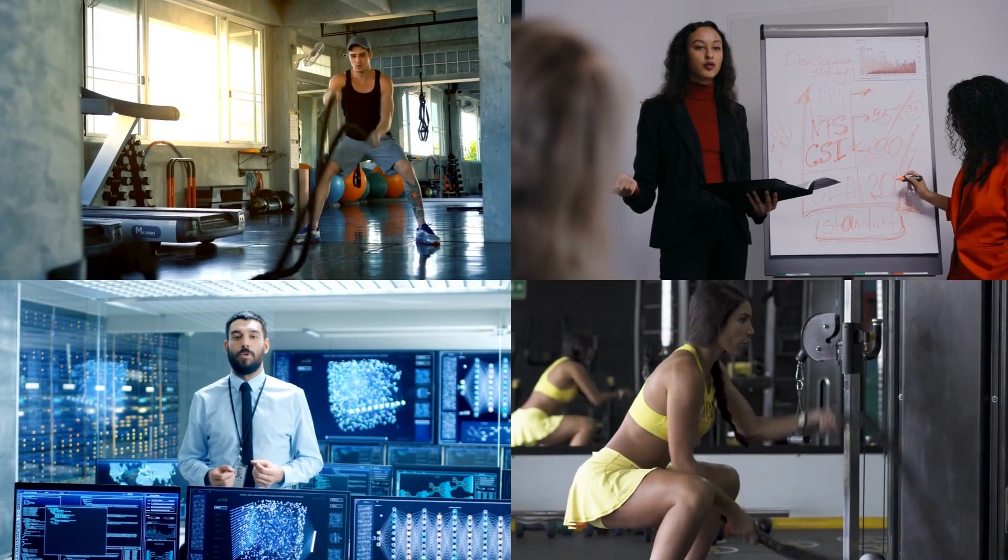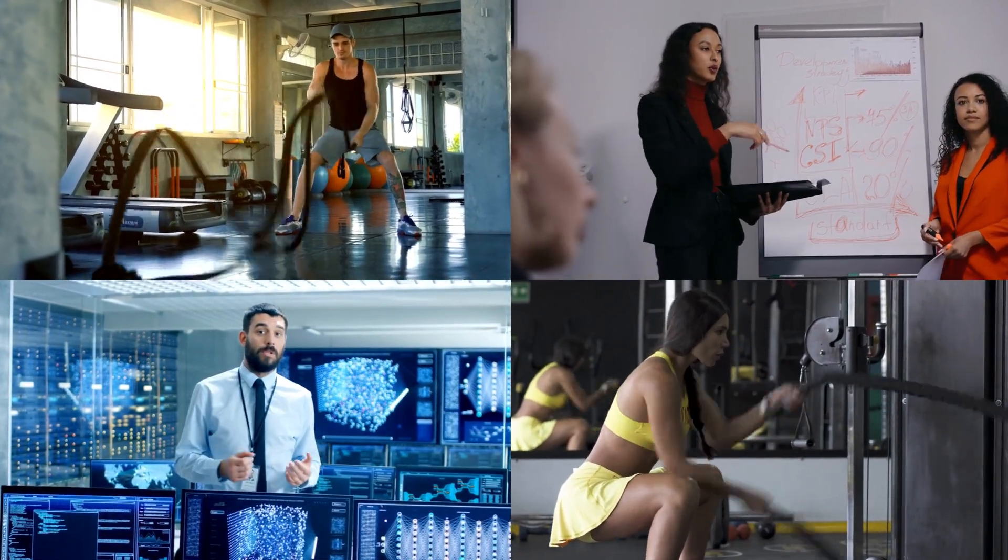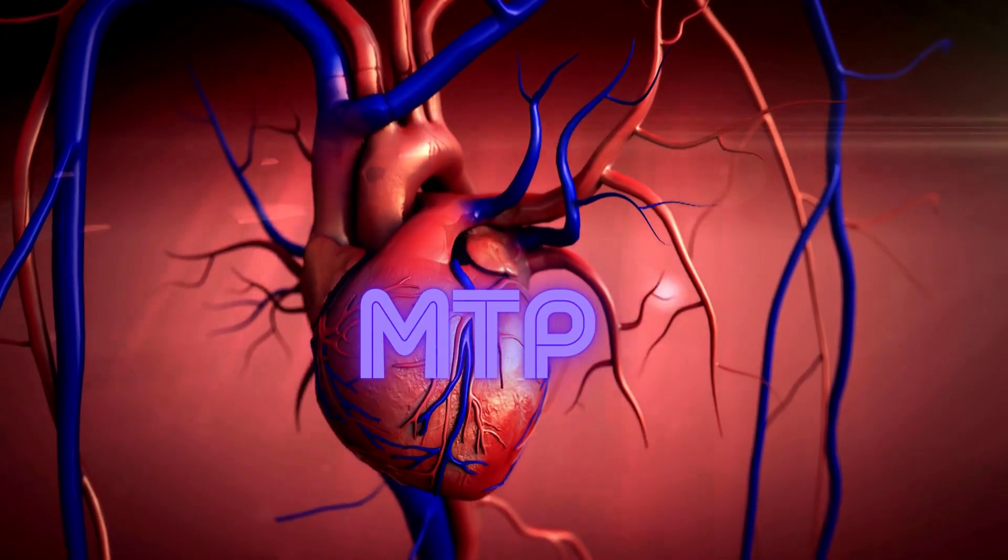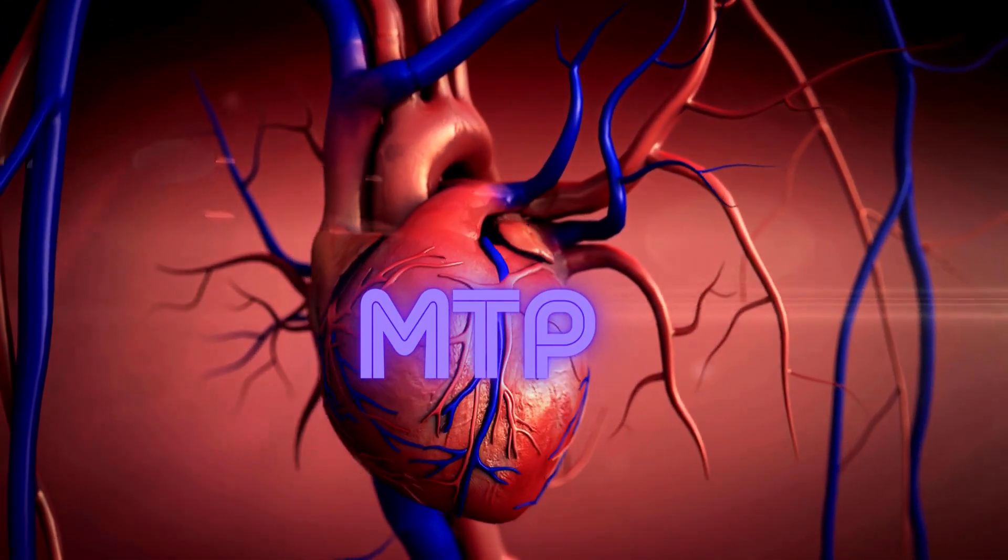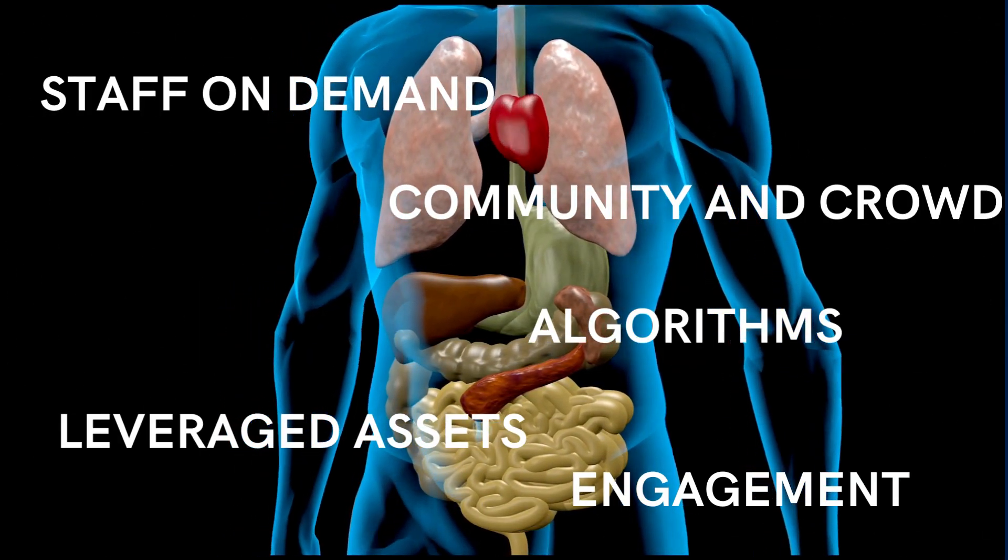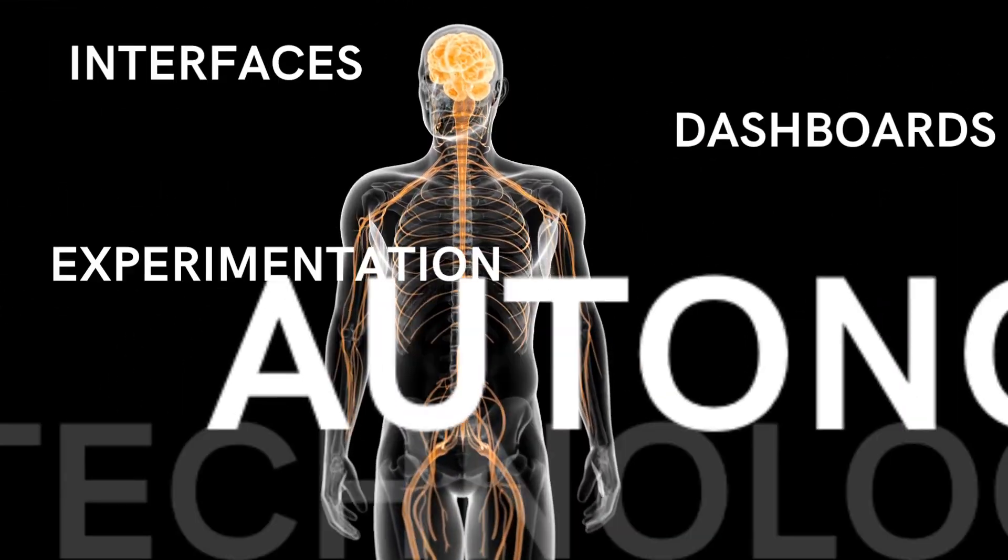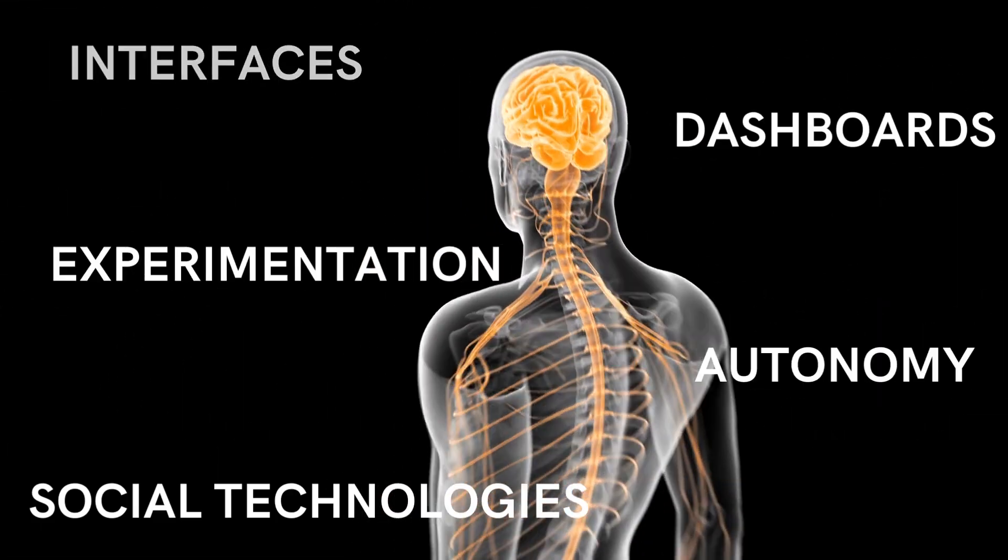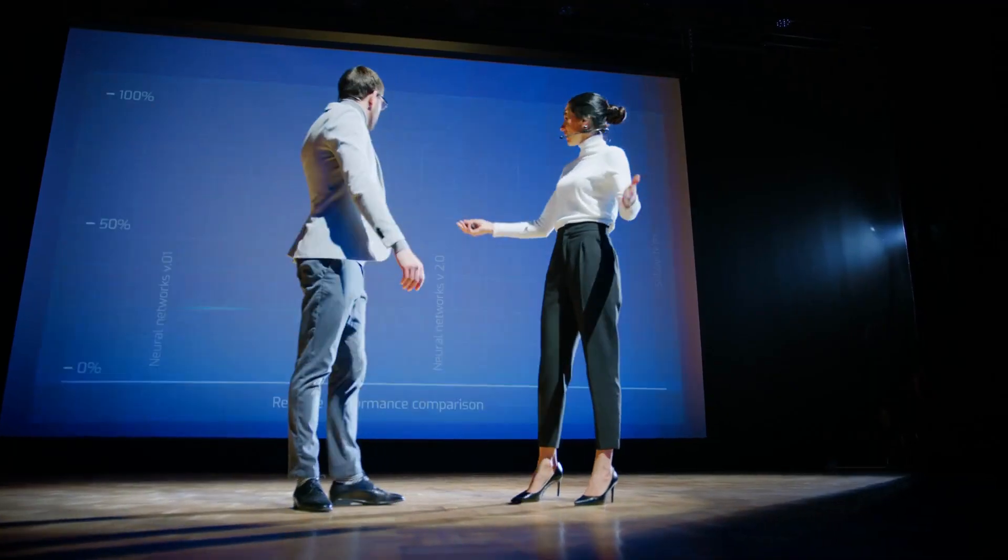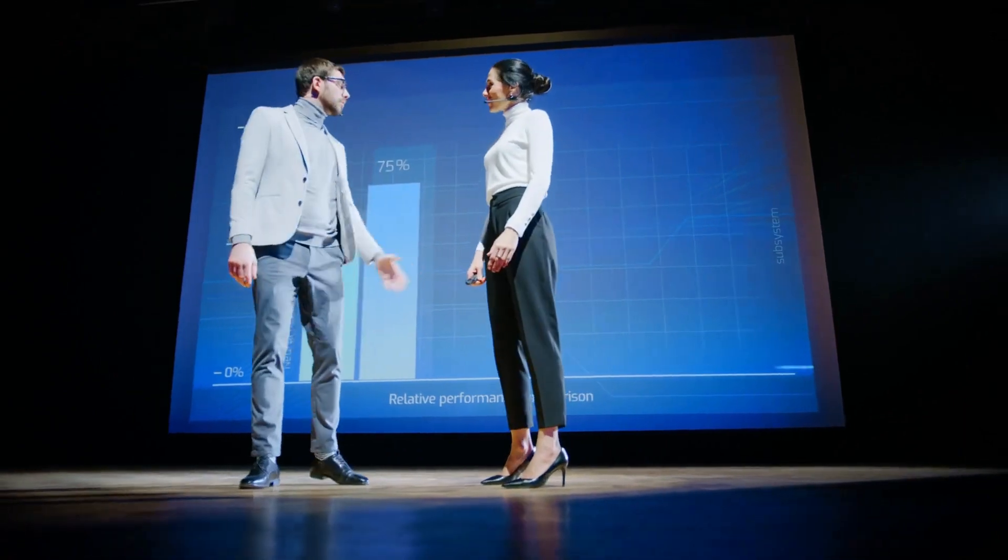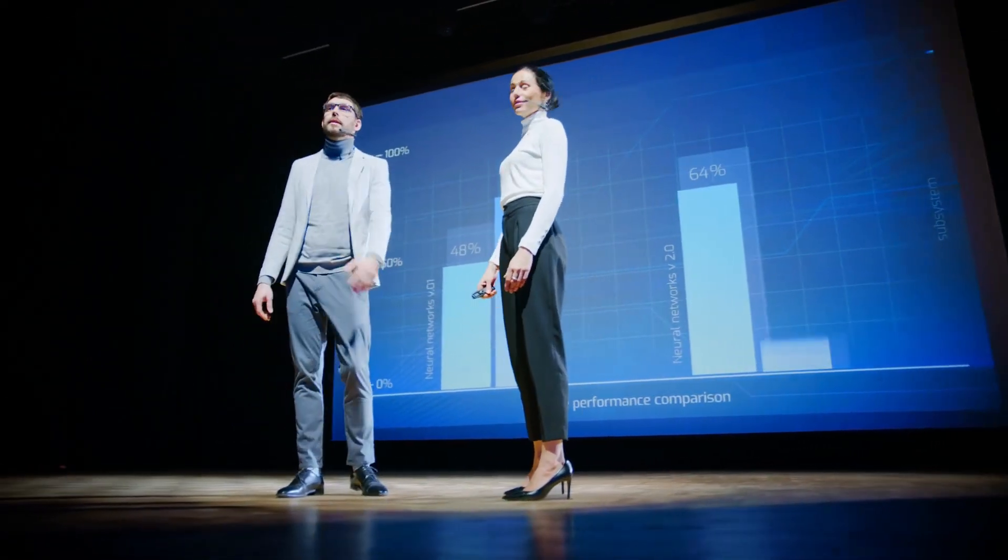So an exponential organization is like a well-oiled, high-functioning body. It has a strong heart, the MTP, that gives it purpose, efficient organs, the scale attributes, that help it grow, and a smart brain and nervous system, the ideas attributes, that keep everything running smoothly. And with all these working together, it's able to move faster, adapt better, and achieve more than traditional organizations.